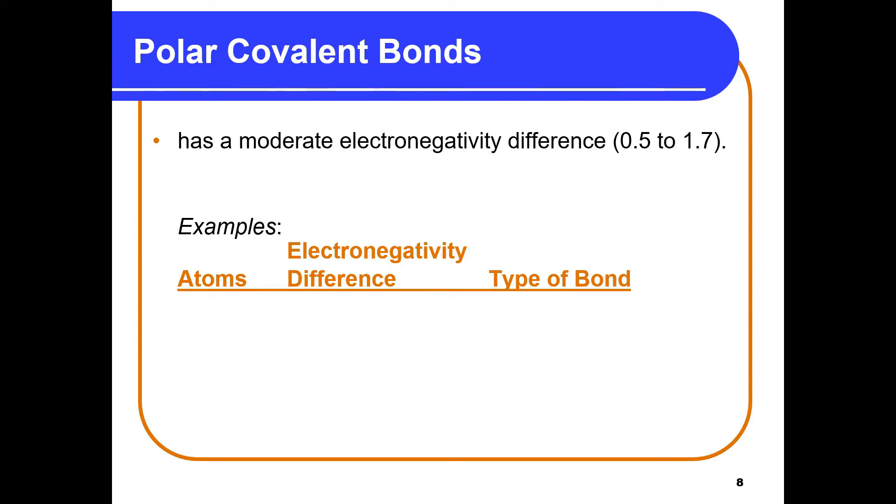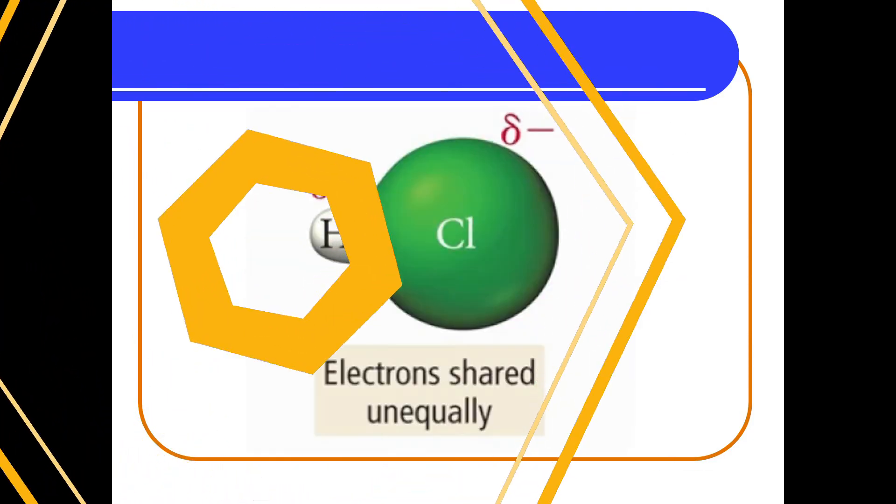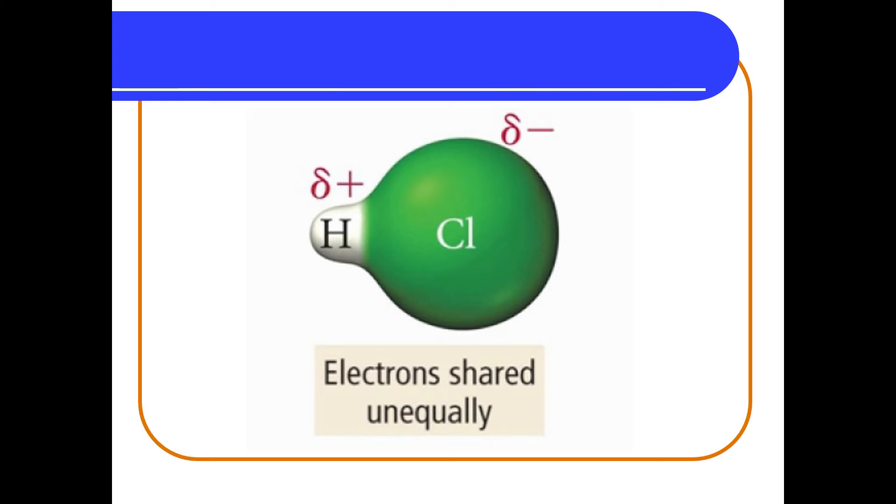For the next type, we have a difference of 0.5 to 1.7. Examples are oxygen bonded with chlorine, chlorine bonded with carbon, and finally, oxygen bonding with sulfur gives us all polar covalent bonds. If we observe molecules with polar covalent bonding, since we see a charge, it seems that there is unequal sharing of electrons.